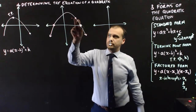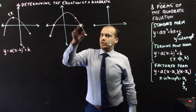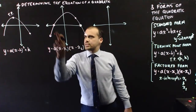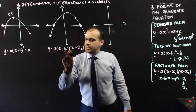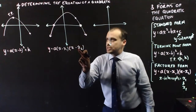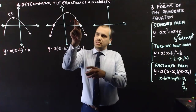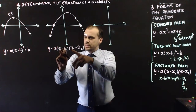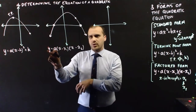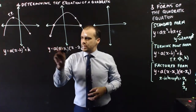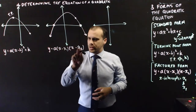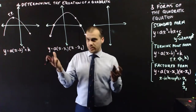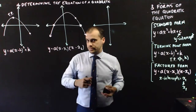In the case where you were told the x-intercepts and some other random point, it would make sense to use factored form. You sub the intercept values in, making sure to swap the signs, then sub the x and y coordinates of the other point in. Once you've got all those numbers filled in, you can figure out what a is, and if you know what a is, you know what the equation is.